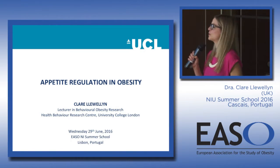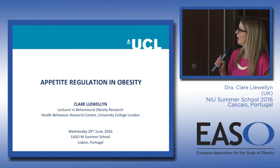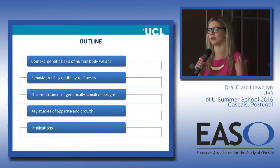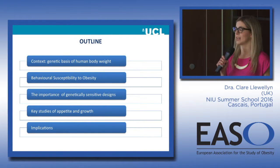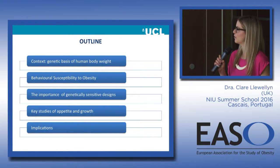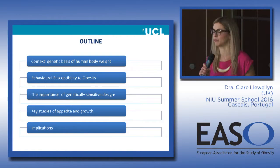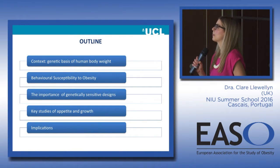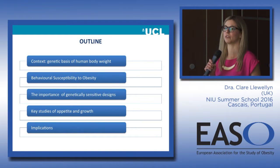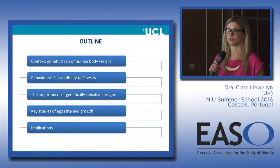I'm going to talk to you today about the role of appetite regulation in obesity and I'm going to start by giving you the context in which we in our lab have been studying the relationship between appetite control and obesity, which is trying to understand the genetic basis of human body weight. I'll briefly summarise behavioural susceptibility theory, talk about genetically sensitive designs, discuss key studies from our lab over the last 10 years, and then a few thoughts about the implications for policy.